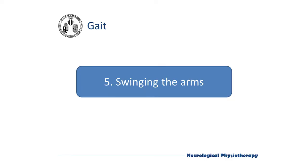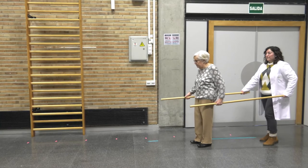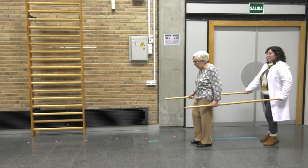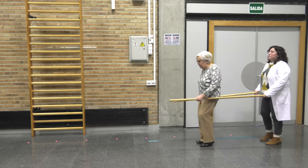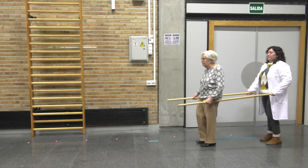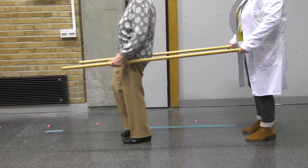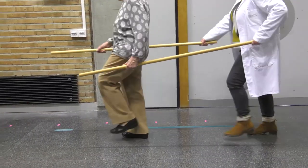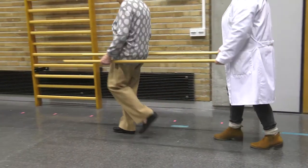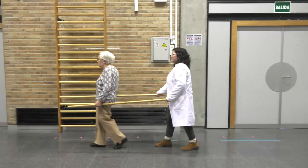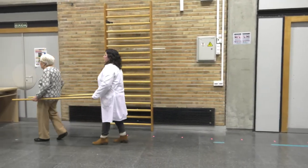Swinging the arms. Now we will incorporate dynamic arm swing to gait. This will make the patient improve the posture and rotate the trunk normally. Time is needed for the patient to coordinate arms and steps. Remember that the arm that leads forward is the opposite of the leg that takes the step.